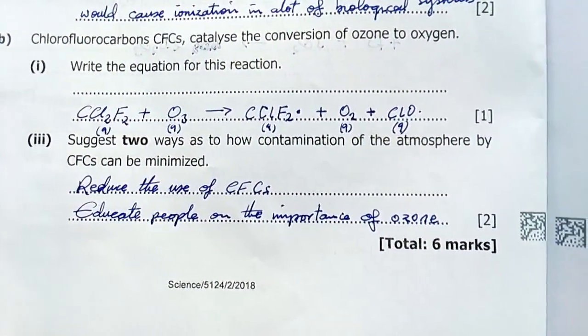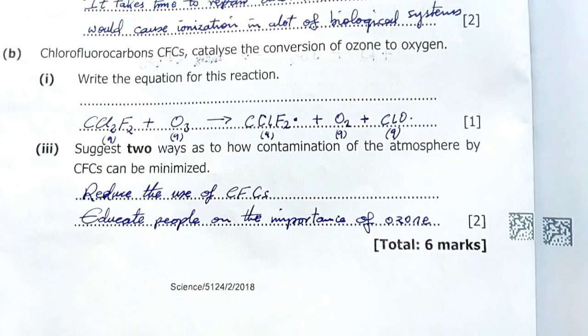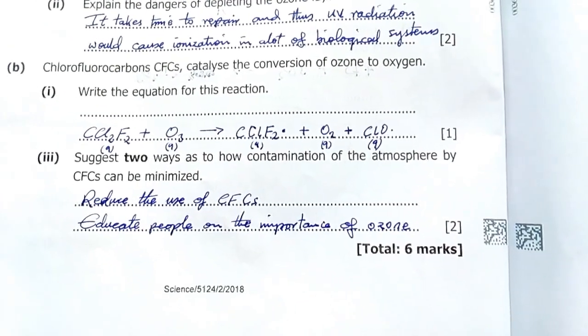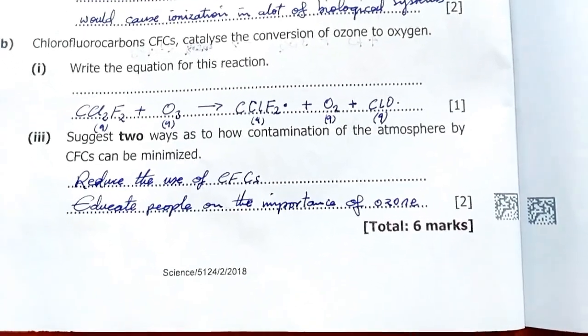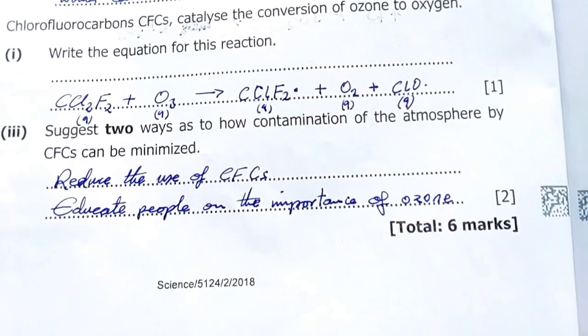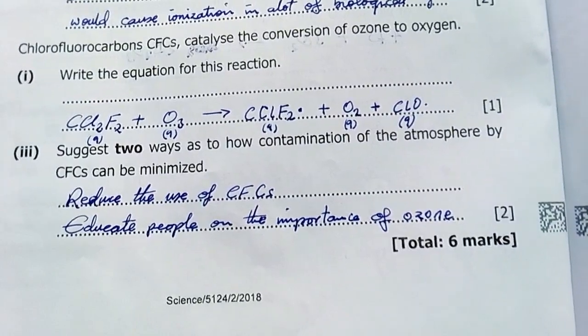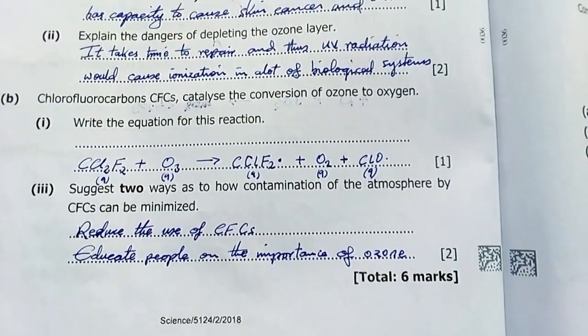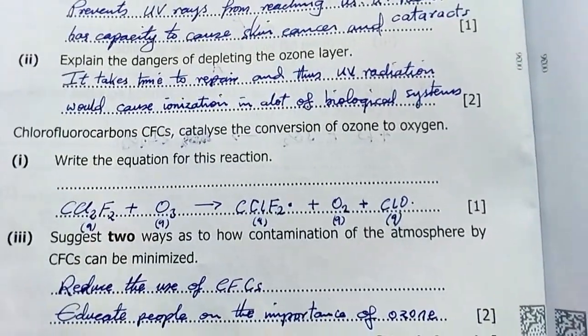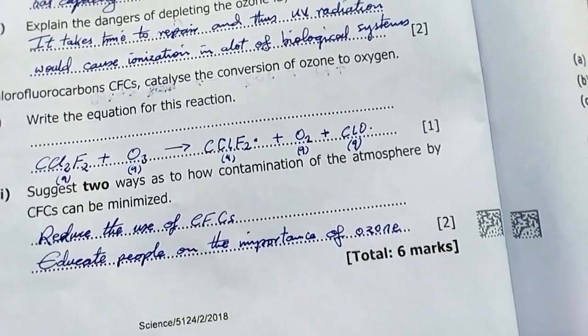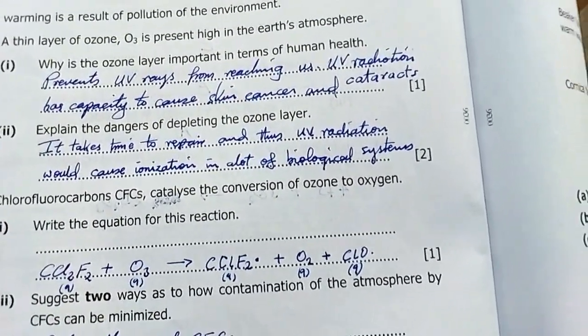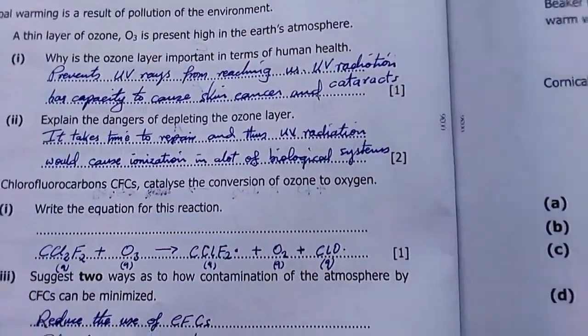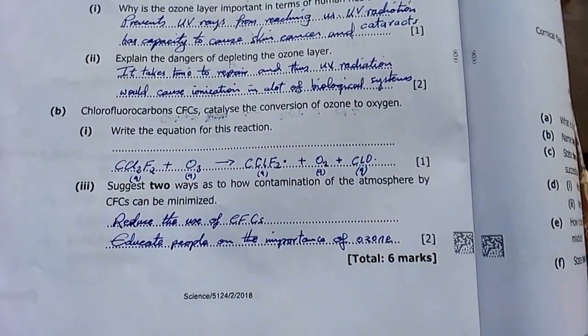Suggest two ways as to how contamination of the atmosphere by CFCs can be minimized. You simply reduce the use of CFCs. Number two, educate people on the importance of ozone. As people know the importance of ozone, and you work on the reduction of release of these CFCs, then you will actually have better maintenance on ozone.